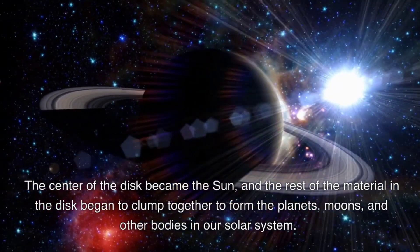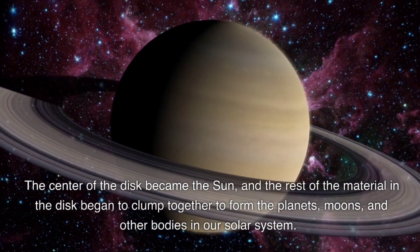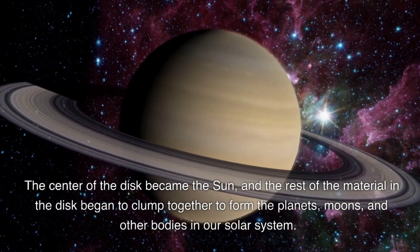The center of the disk became the sun, and the rest of the material in the disk began to clump together to form the planets, moons, and other bodies in our solar system.